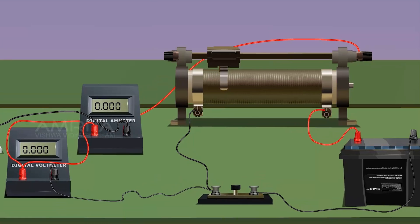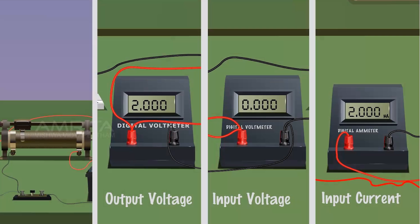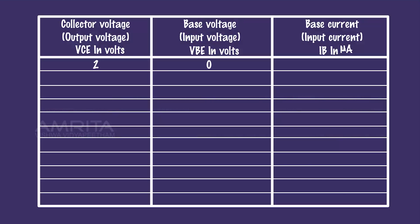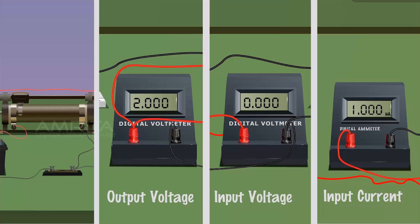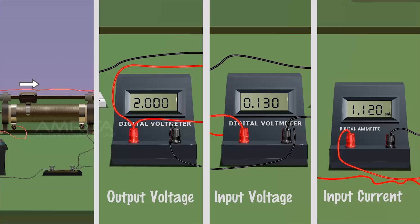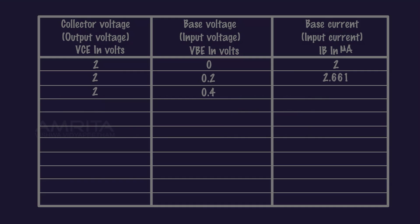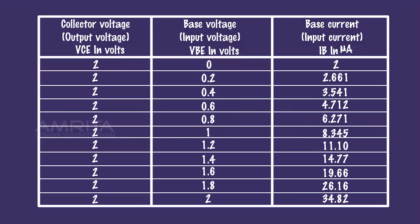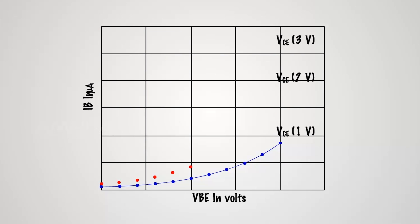Adjust the rheostat RH2 and increase the collector voltage VCE to a constant value. Note the base voltage VBE and base current IB. Record the values in a tabular column. By keeping the collector voltage constant, the base voltage VBE is varied from zero by adjusting the rheostat RH1. Note the base voltage VBE and base current IB. Record the values in the tabular column. Increase the base voltage using the rheostat RH1 and repeat. Plot the VBE vs IB graph for the constant VCE.